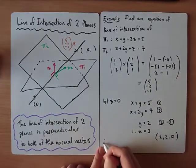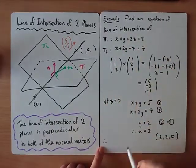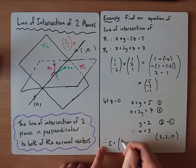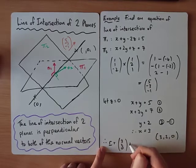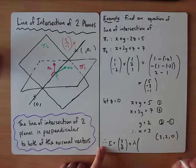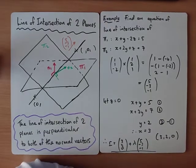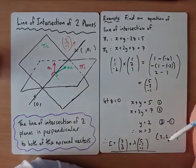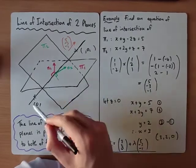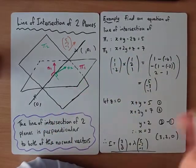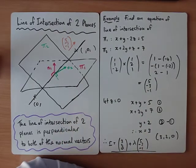So we could say therefore an equation of the line would be: r equals the point on the line (3, 2, 0) plus a constant times by the direction of the line (5, −3, −1). There are actually loads of ways you can answer this question — you can find two points on the line. You could let z = 0 to find one point, let y = 0 to find another, and if you know two points on the line you can find the direction between them.